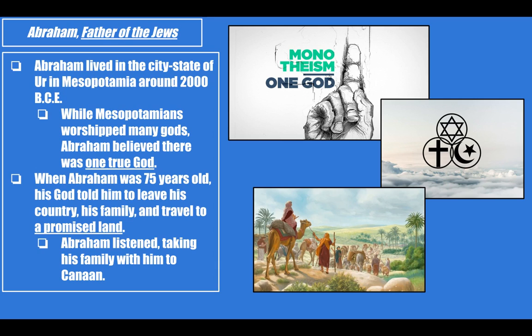Monotheism is the belief in one God. These symbols represent three of the world's main current monotheistic religions. It kind of all started with Judaism — the Star of David representing Judaism. Then later on, Christianity is a monotheistic religion, belief in one God. And finally, Islam, also a belief in one God. Christianity and Islam both have their roots in Judaism, tracing back to individuals from this religion. And this is a picture of Abraham taking his family with him to Canaan.